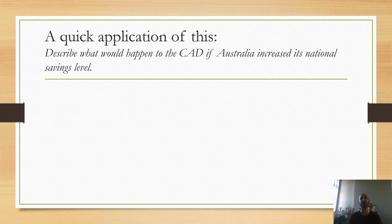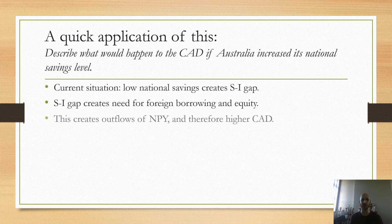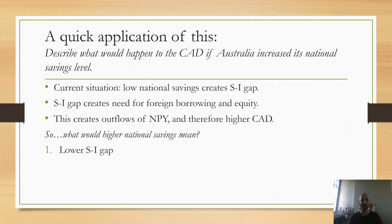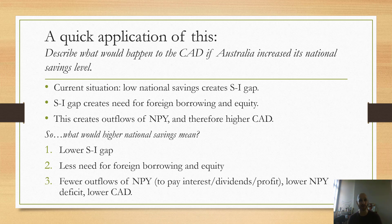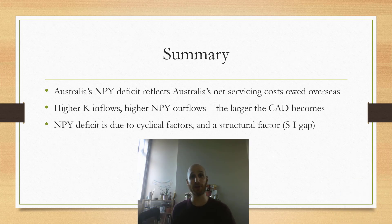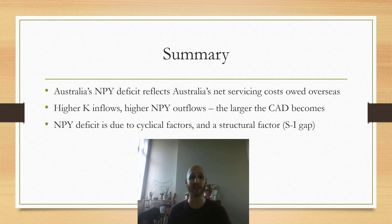A quick application: if Australia increased its national savings level, we know that low national savings creates a gap. So higher national savings would shrink the savings-investment gap, meaning less need for capital inflow, less need for outflows from NPY, reducing the NPY deficit and reducing the current account deficit. To summarise: Australia's NPY deficit is about Australia's net servicing costs owed overseas. Higher capital inflows lead to higher NPY outflows and a larger current account deficit. The NPY deficit is due to cyclical factors and one structural factor, which is the savings-investment gap.